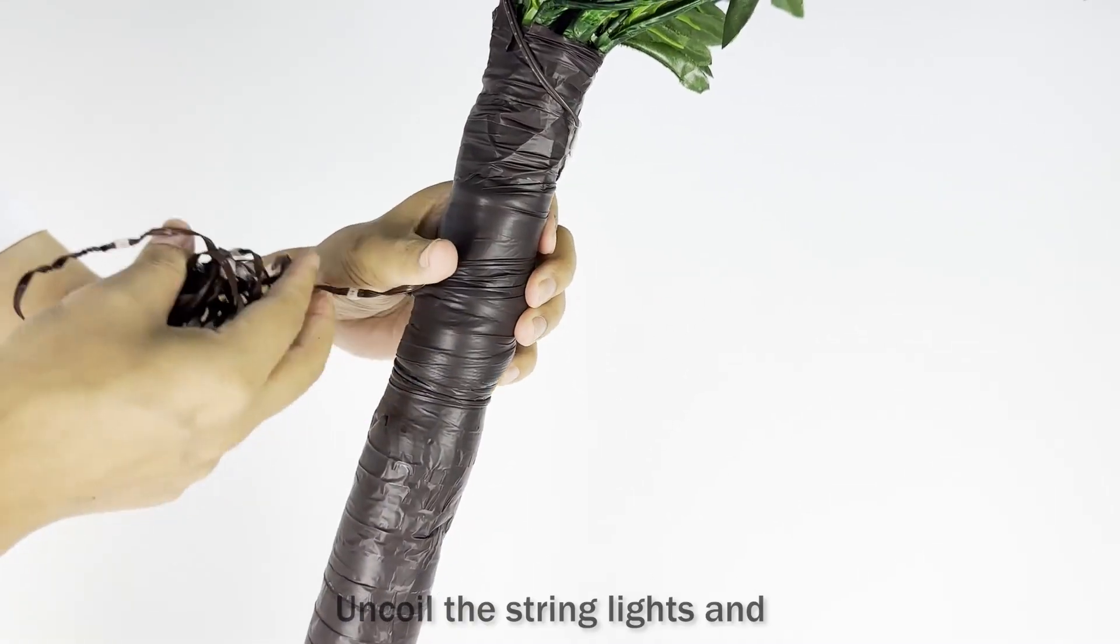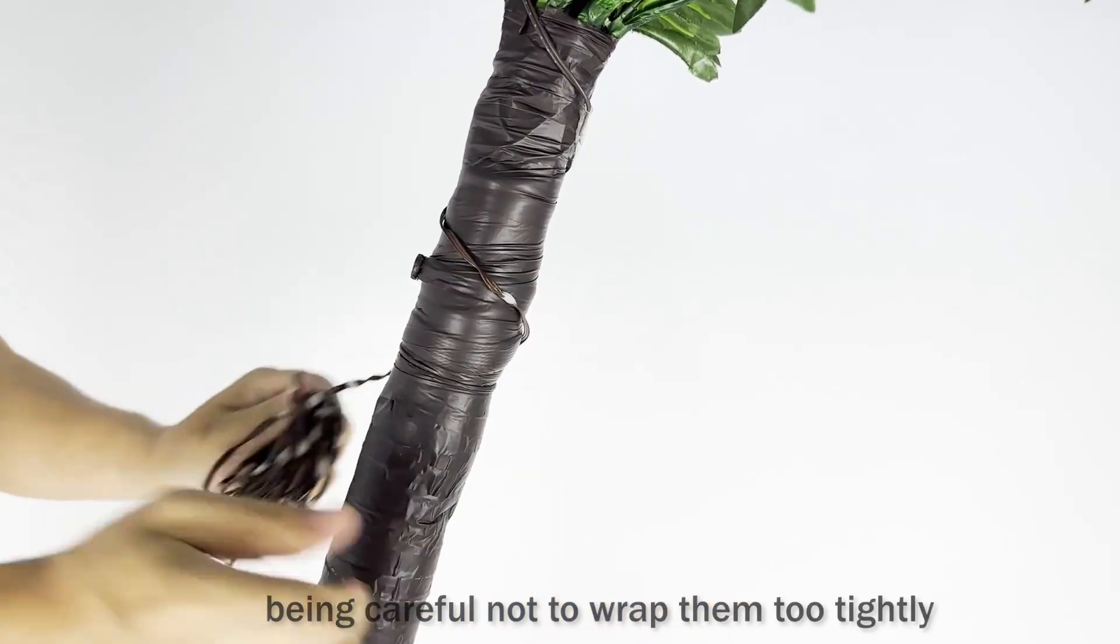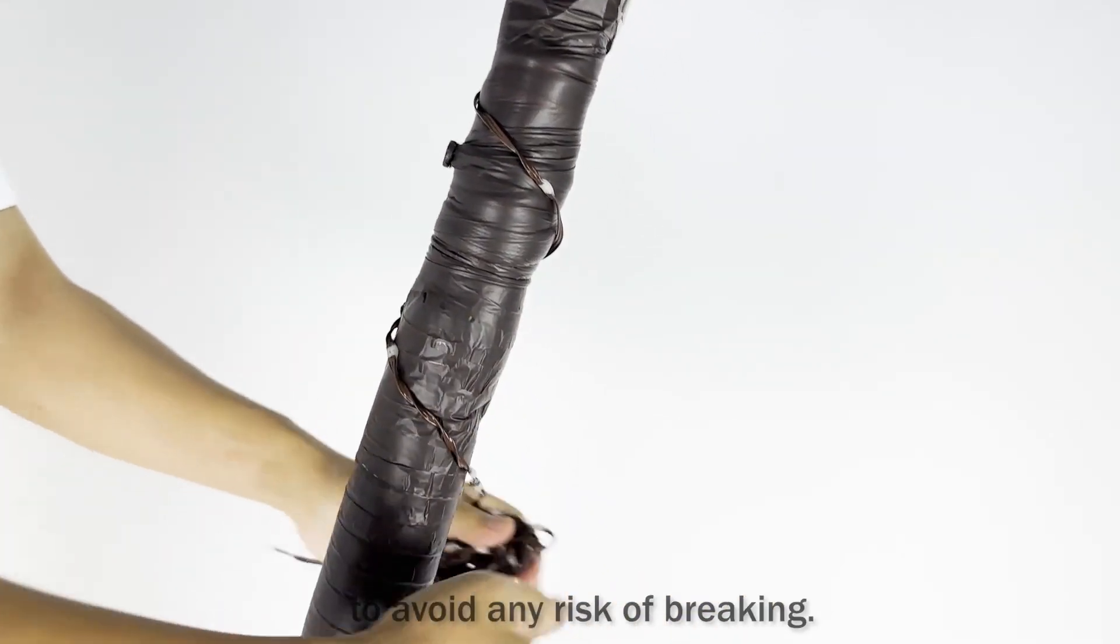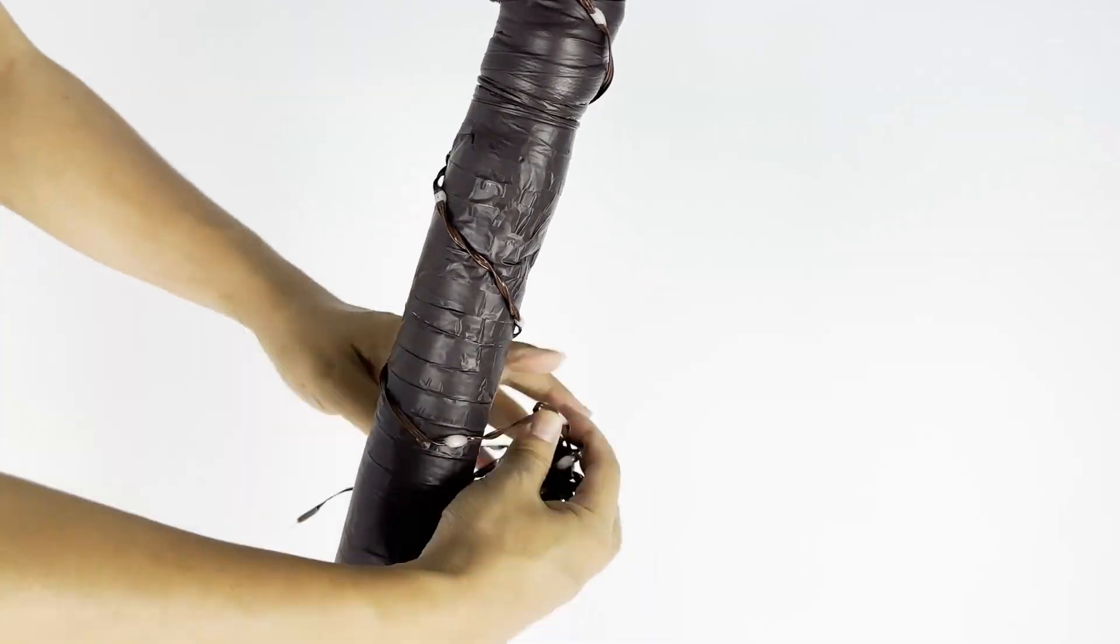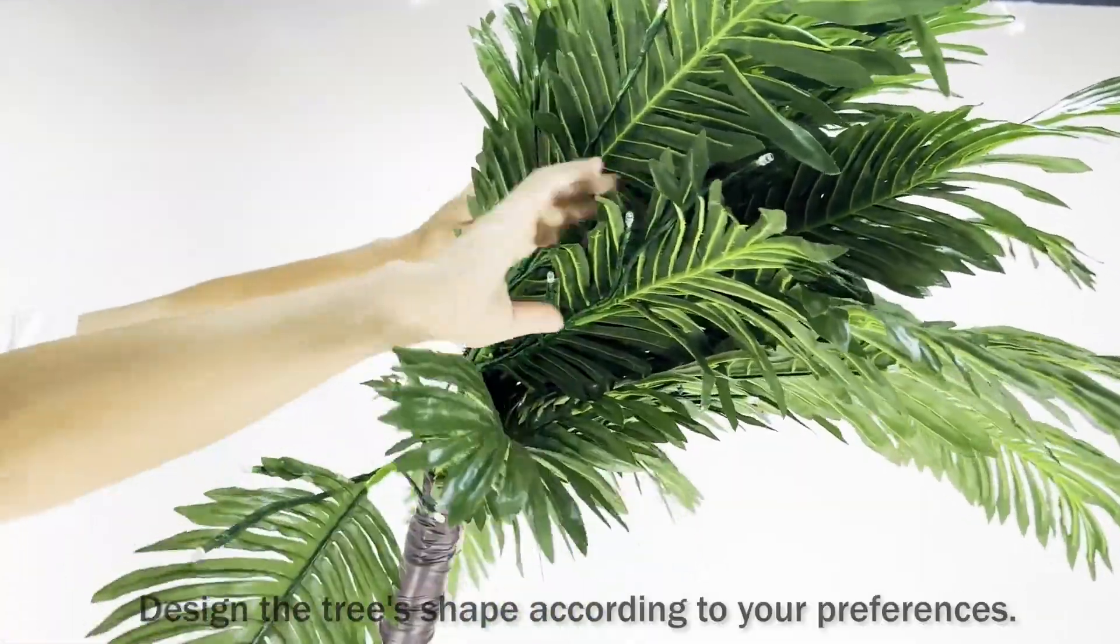Uncoil the string lights and wrap them around the tree trunk, being careful not to wrap them too tightly to avoid any risk of breaking. Design the tree's shape according to your preferences.